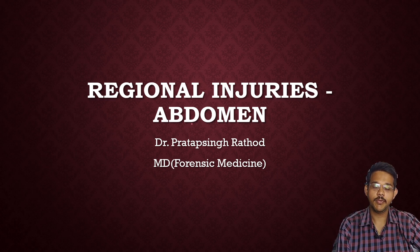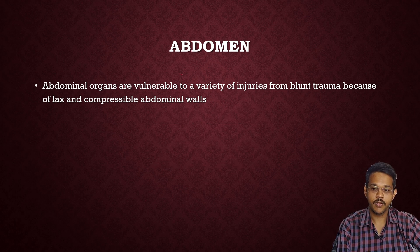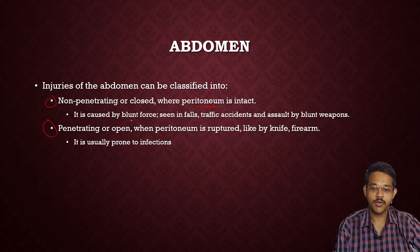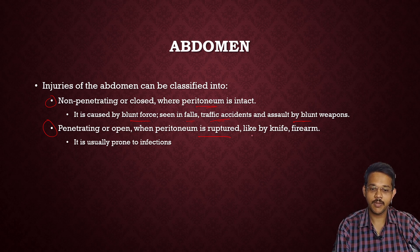Hi friends, I am Dr. Pratap Singh. I have done Indian forensic medicine and today we'll continue with regional injuries. Today's video will discuss injuries to the abdomen. Abdominal organs are vulnerable to a variety of injuries, mainly blunt trauma, because of lax and compressible abdominal walls. Injuries of the abdomen can be divided into non-penetrating, where peritoneum is intact, caused by blunt force seen in falls and traffic accidents, and penetrating or open injuries where peritoneum is ruptured, as by knife or firearms, which may lead to peritonitis or sepsis.